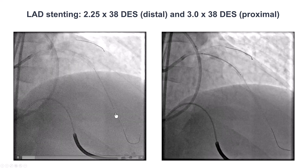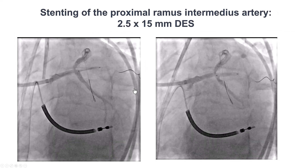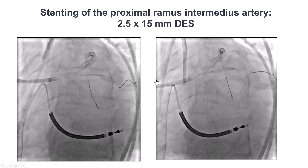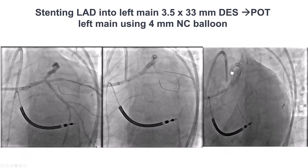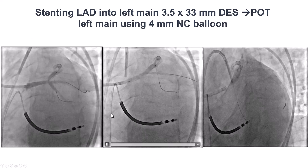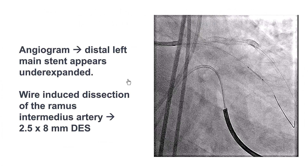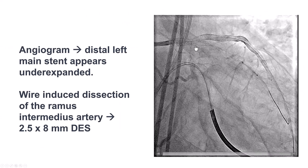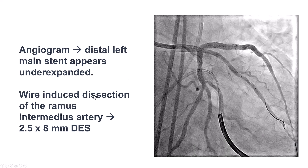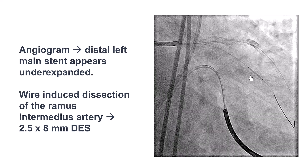We then stented the LAD CTO with drug-eluting stents in the proximal and mid-segment. And then we also ended up stenting the RAMUS, which did seem to have significant disease. And then we decided to stent into the left main using the provisional approach, since there was no significant disease in the origin of the circumflex. We did the proximal optimization technique, but there was under-expansion on the distal left main. And there was also a likely stent-induced dissection in the RAMUS, so we placed an additional stent there.